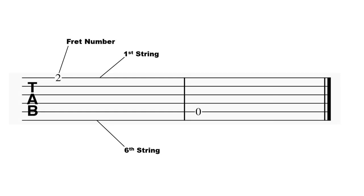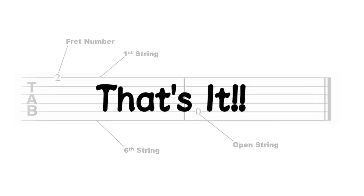For example, here, two on the first line means that you have to press the second fret of the first string for this note. If you see zero on a line, that means you play the open string for this note. That's it. Now you can read tab too.